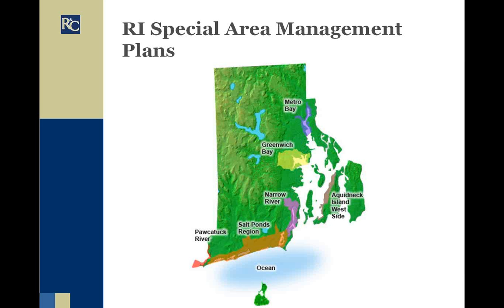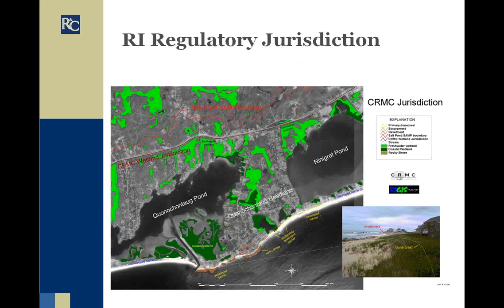Here's a map of the special area management plans. And here, along the south shore of Rhode Island, a detailed map points out all the regulated areas: coastal features, the boundary between CRMC wetland jurisdiction versus inland wetlands, salt pond special area management plan areas, freshwater inlands, rocky shores, developed barriers, and moderately developed barriers — all things you need to consider when permitting in Rhode Island.